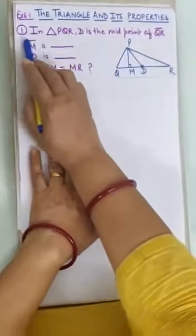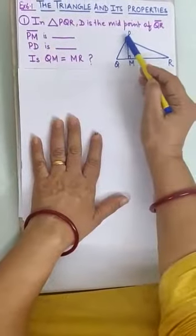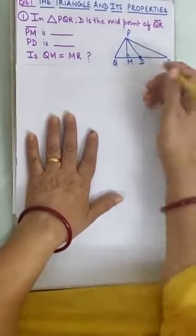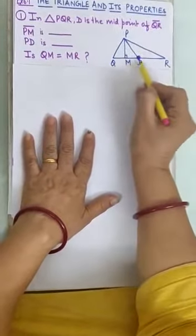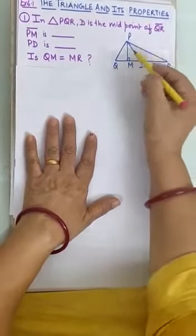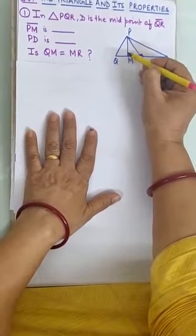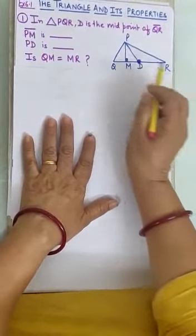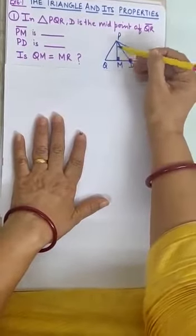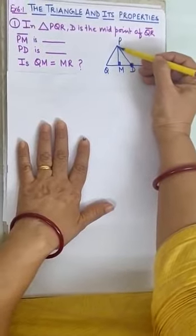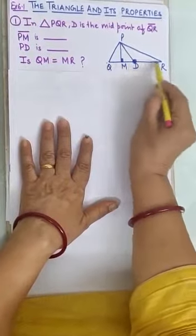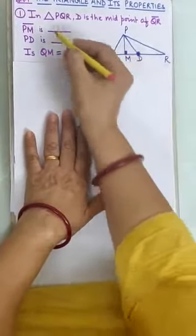The very first question is: in a triangle PQR, D is the midpoint of QR - it lies in the middle. PM is drawn and you can see that it looks 90 degrees. PM is the perpendicular, that is the line joining the vertex and perpendicular to the opposite side. So PM is the altitude.